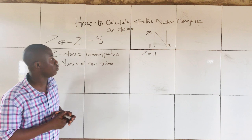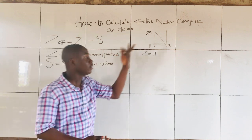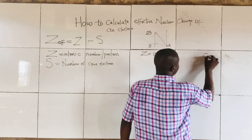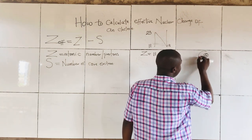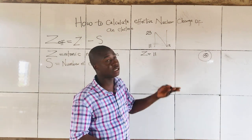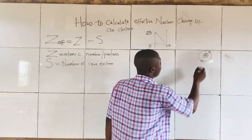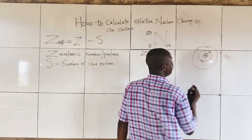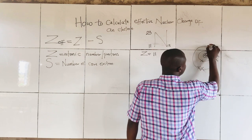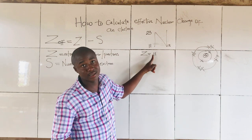Now how do we determine the number of core electrons? Simply by drawing the electronic configuration of sodium. This is the nucleus of sodium. The first energy level, also called the K shell, contains two electrons. The next energy level is the L shell, containing eight electrons.